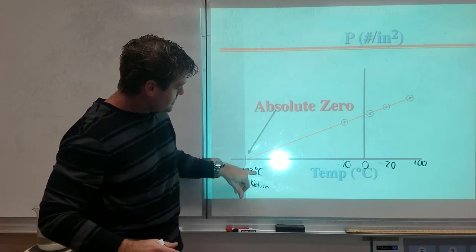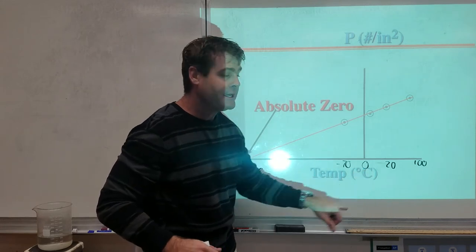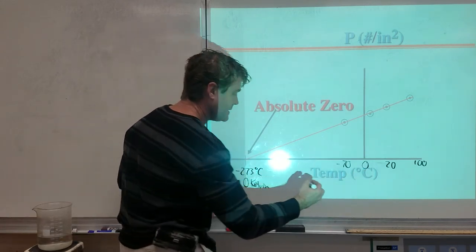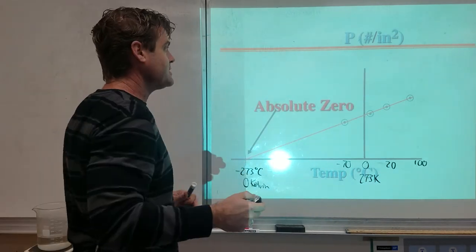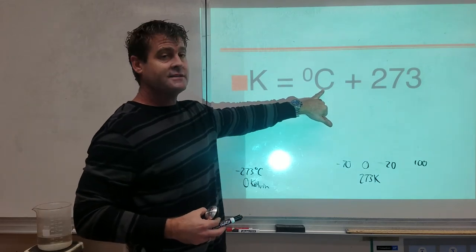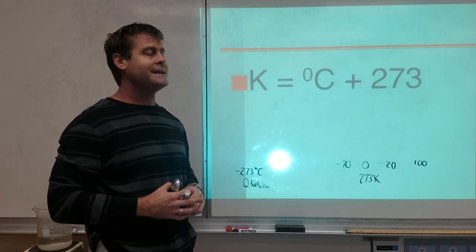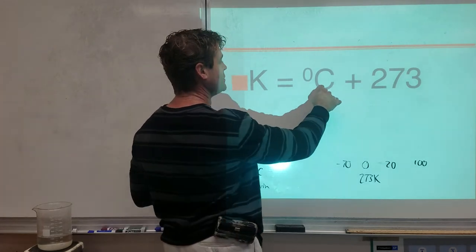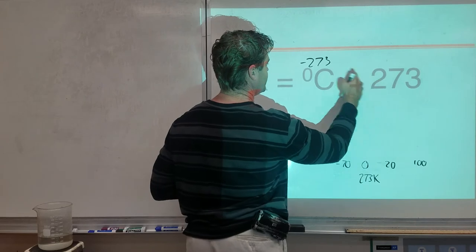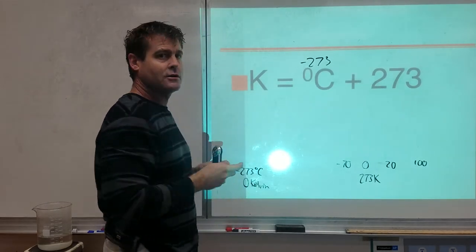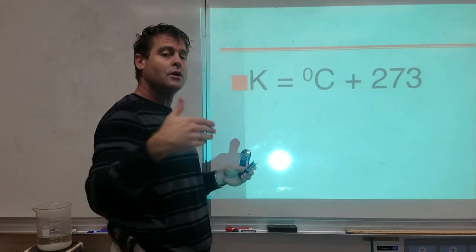The scientific community uses the Kelvin scale as the absolute temperature scale. Since -273°C is the coldest possible temperature, it corresponds to 0 kelvin. The conversion is simple: take your Celsius value and add 273 to get the Kelvin temperature. So -273°C = 0 K, and 0°C = 273 K. Zero kelvin means exactly what you'd expect — zero molecular motion.